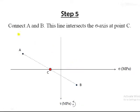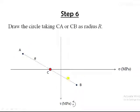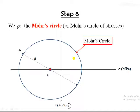Now if we connect A and B, this line will intersect the normal stress axis at the center point C, which is -155 — confirming our calculated center. If you only know A and B, connecting them and finding where this line cuts the sigma axis gives you the center of the Mohr's circle. Taking the distance CA or CB as the radius, we can plot the Mohr's circle, also known as the Mohr's circle of stresses.